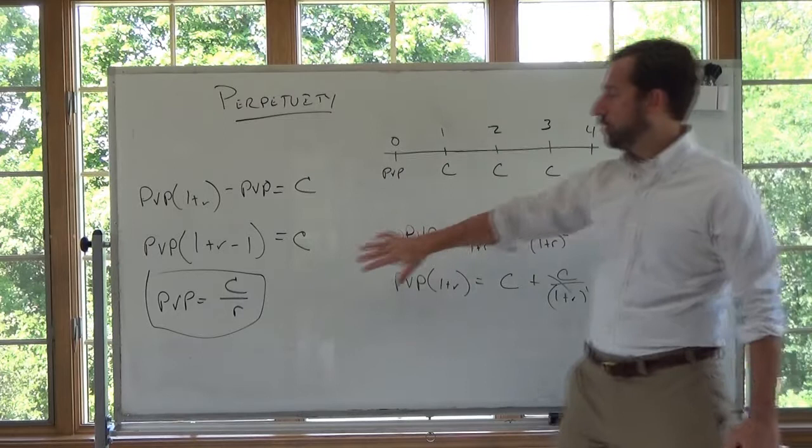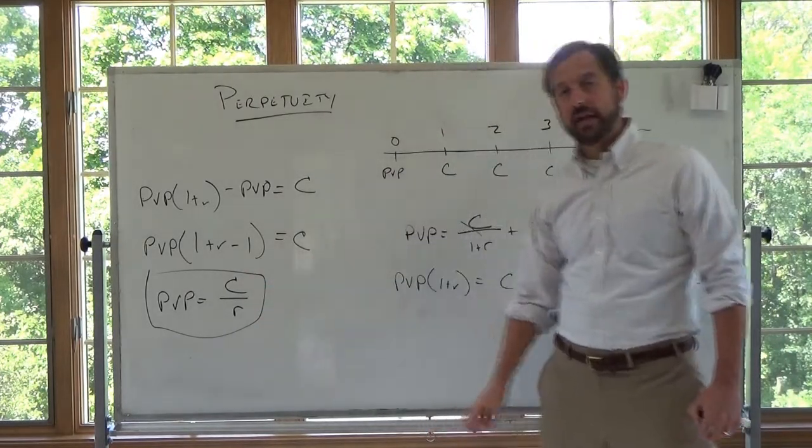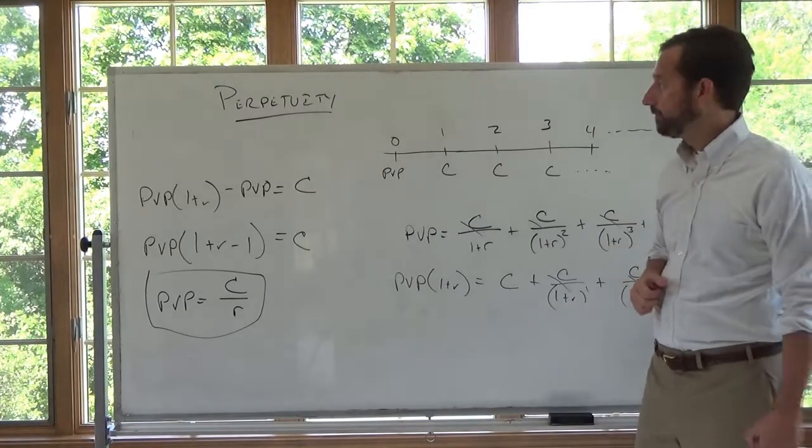Second, we're going to use this. The next thing we're going to talk about is an annuity. We're going to use this to calculate the present value of an annuity.